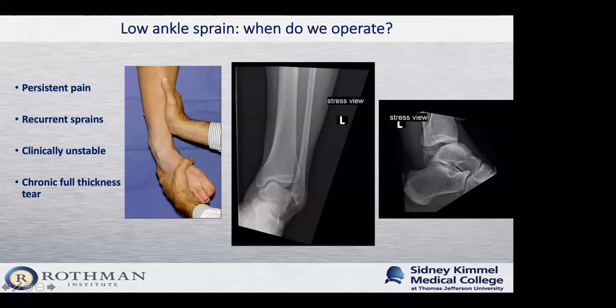We test for instability both clinically by feeling how loose the ankle is, and with stress views on imaging. On the left side you'll see an inversion test — seeing how far the ankle turns in. On the right side is an anterior drawer test — you can see how far the ankle joint comes forward relative to the upper leg. From an imaging standpoint, a chronic full-thickness tear in the setting of clinical instability is also an indication for surgery.